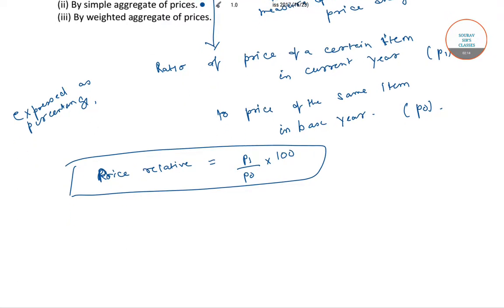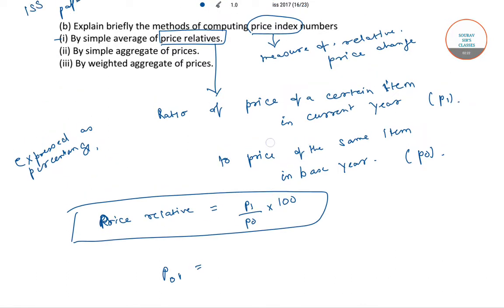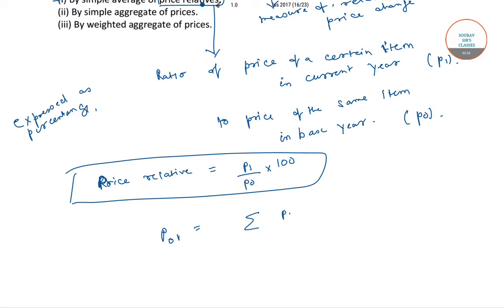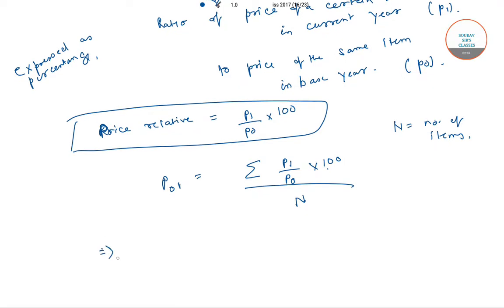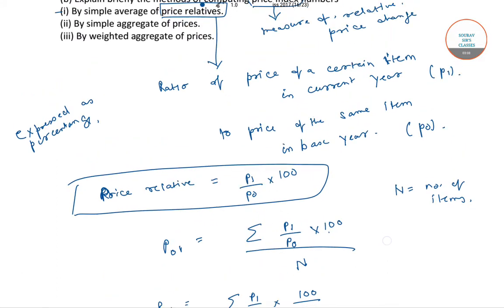Therefore, the price relative equals p1 divided by p0 into 100. The price index number for the current year, denoted by P01, is the simple average of price relatives: P01 equals summation of (p1/p0 × 100) divided by n, where n is the number of items.